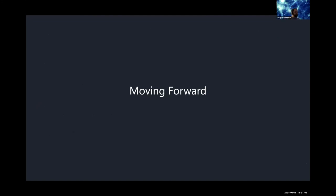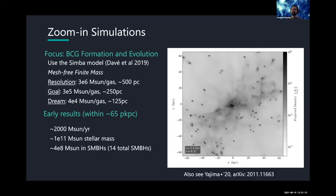So that was the work that I did before the pandemic and that's published and on the archive and in Monthly Notices if you want to take a look and ask any questions. But moving forward we wanted to investigate this in zoom-in simulations because I'm very interested in BCG formation and evolution. So we decided to do that using the Simba model from Davé et al 2019. This is the mesh-free finite mass method which seems to have the benefits of SPH while also the benefits of grid codes together. So that's kind of nice. Right now we have simulations at a resolution of 3 times 10 to the 6 solar masses per gas particle for 500 parsecs and we re-simulated one of the 300 project clusters, the second most massive cluster's BCG evolution down to redshift 2. On the right you can see a projection of the density for that and this is again the same region that SPT 2349 would have covered about 65 kiloparsec radius. This galaxy has 2000 solar masses per year, it's very massive in solar mass already at redshift 4.2 and there are 14 supermassive black holes in this region all summing together to be 4 times 10 to the 8 solar masses.